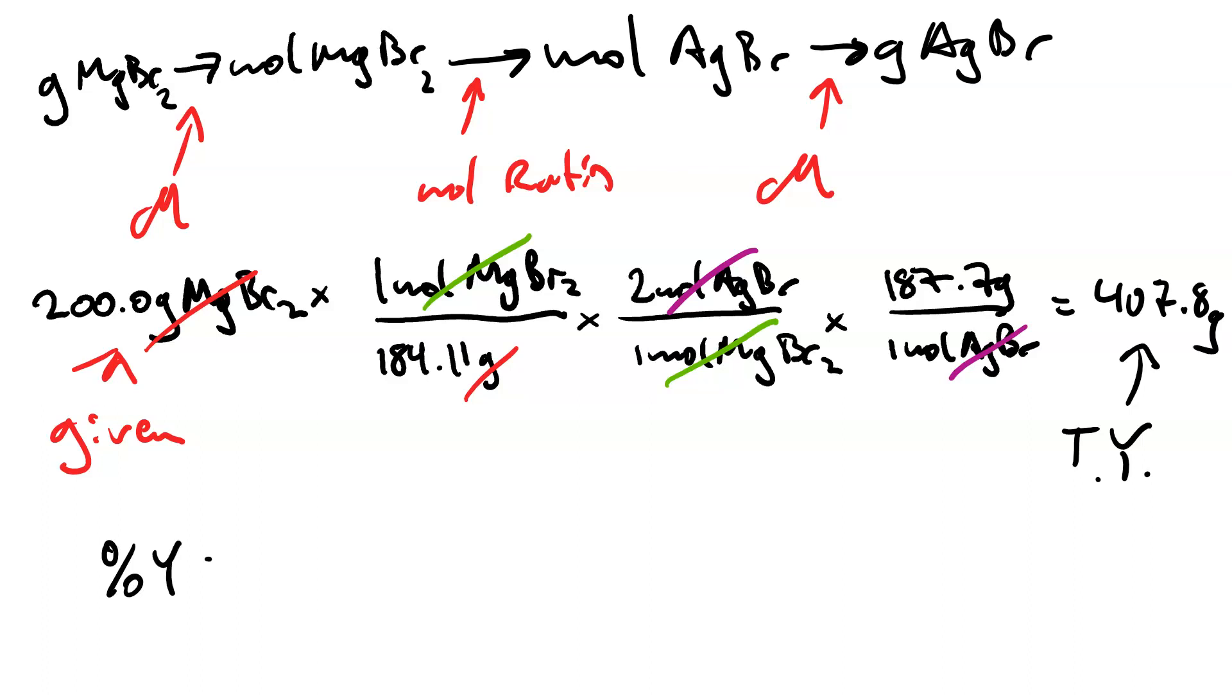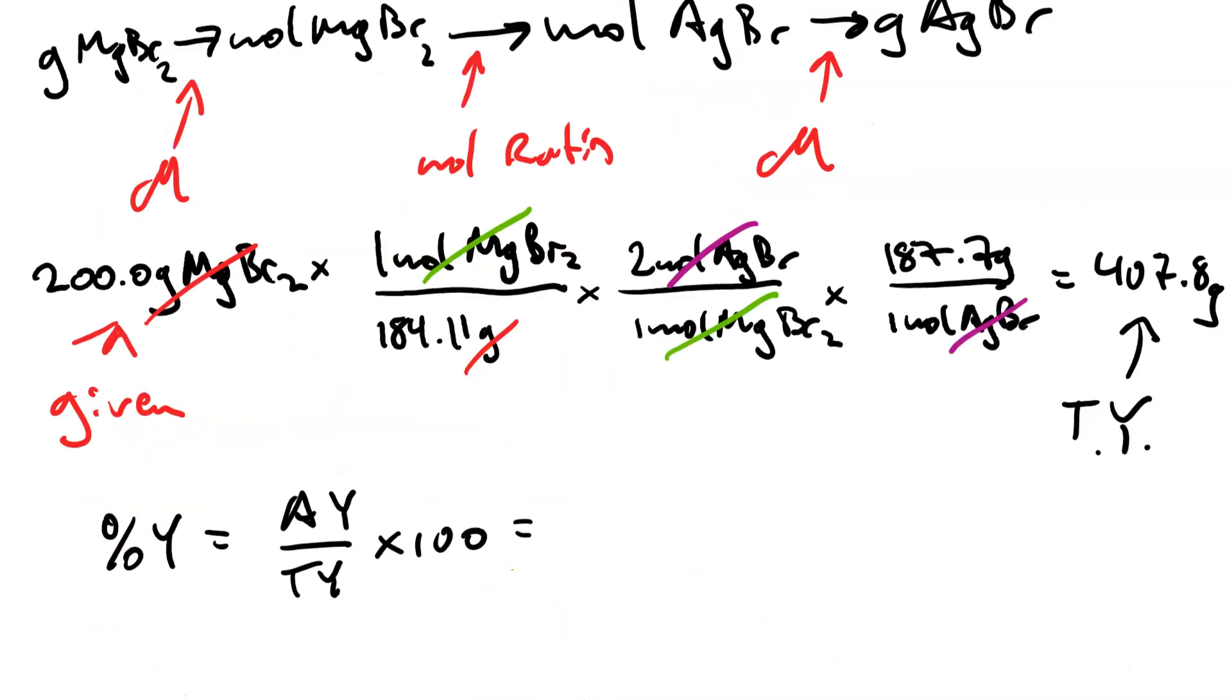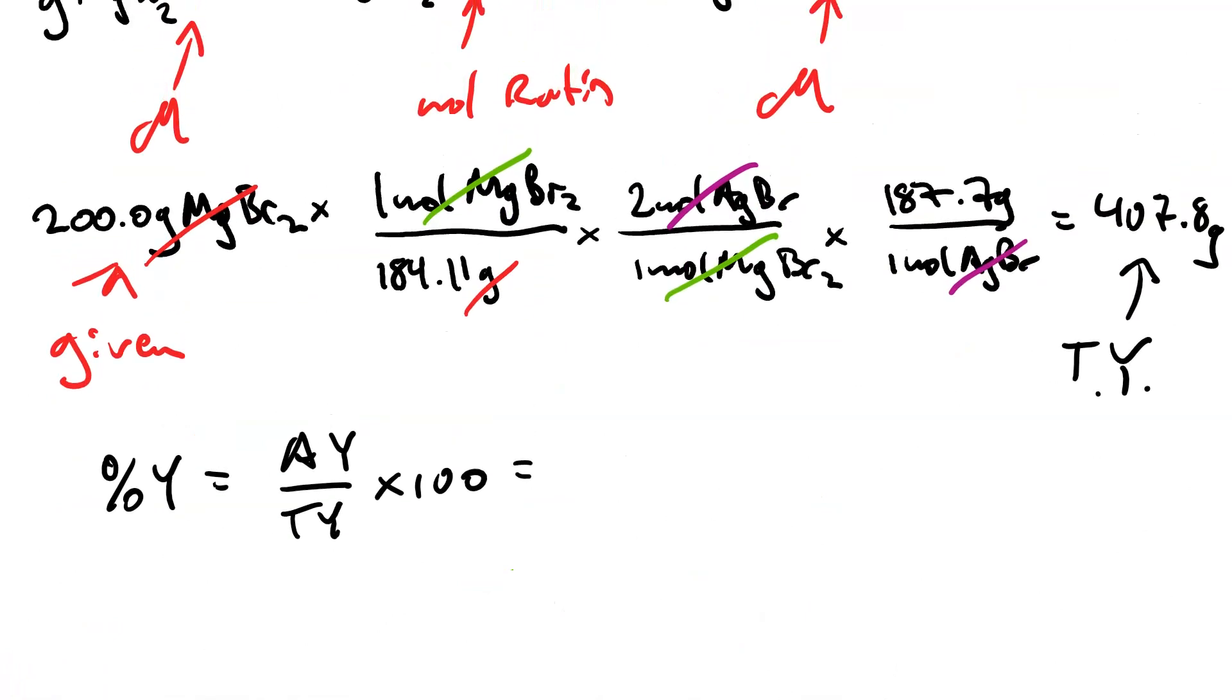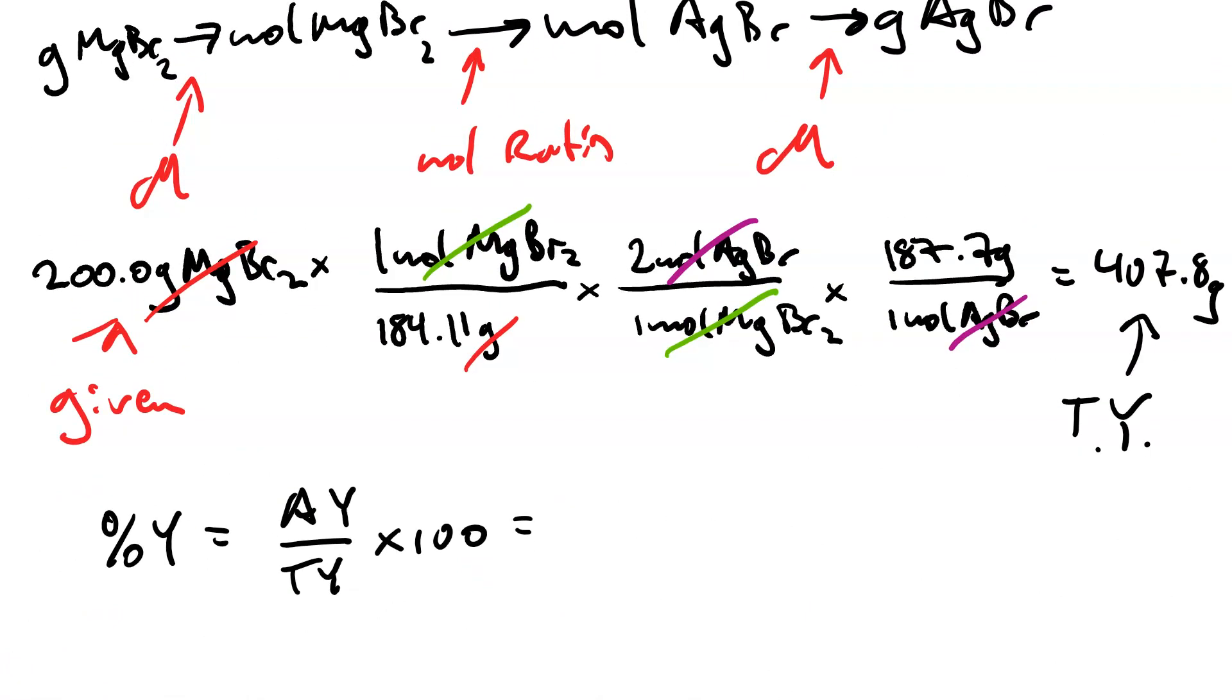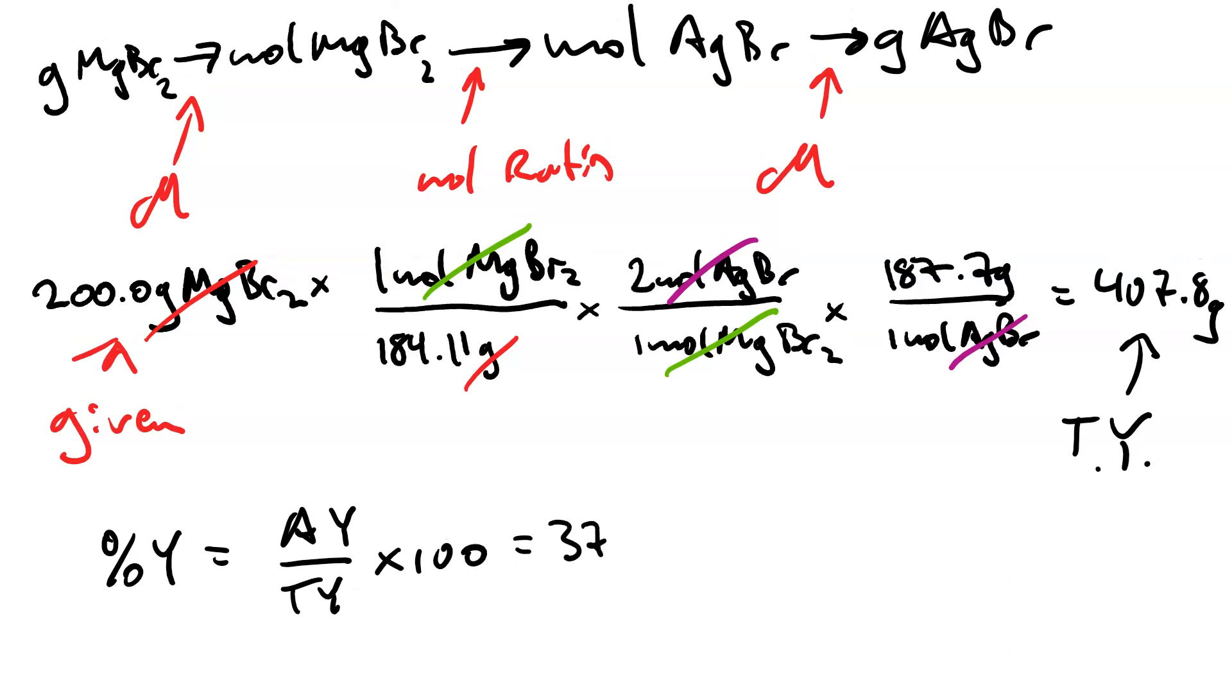So now the percent yield equals the actual yield over the theoretical yield times 100. So our actual yield was given to be 375 grams. Our theoretical yield is 407.8 grams, and we multiply it by 100. And that gives us 91 point, oh actually 92.0 percent.